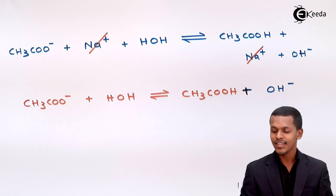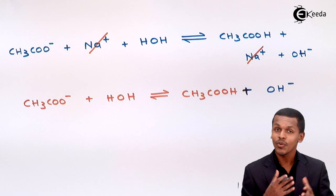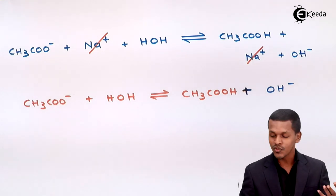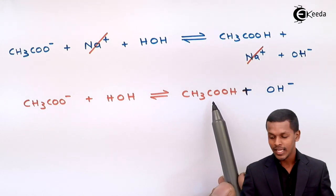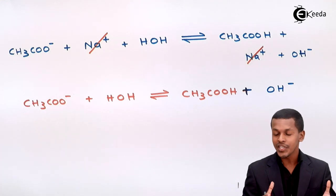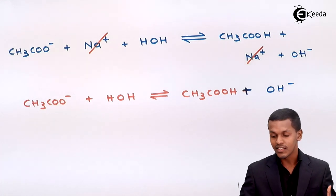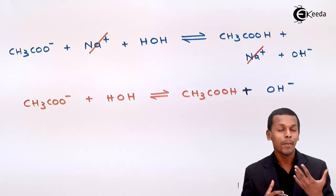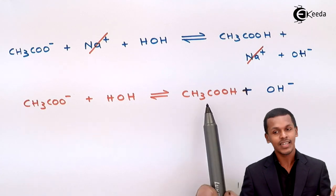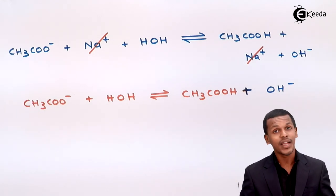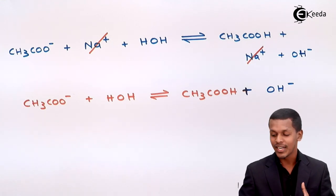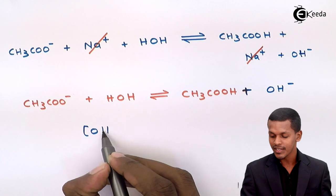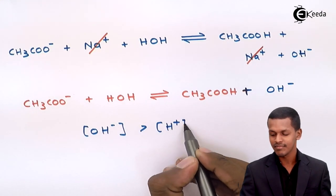The concentration of OH- ions keeps increasing because the water molecule provides both H+ and OH- ions, but the H+ ion is consumed by the acetate ion to form a weak acid. This weak acid (acetic acid) does dissociate into CH3COO- and H+, but that dissociation is much less compared to the OH- ions produced. Therefore the concentration of OH- is greater than that of H+ in the solution.